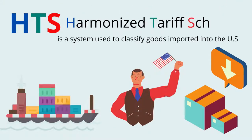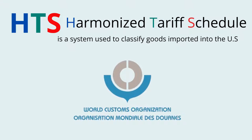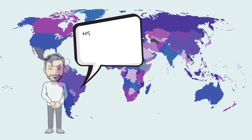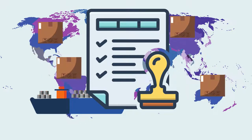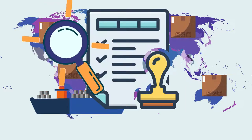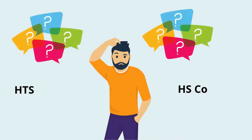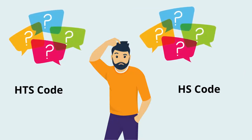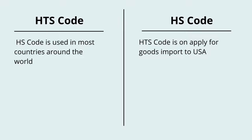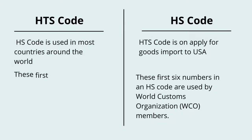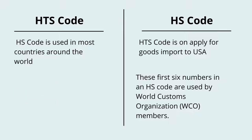HTS, harmonized tariff schedule, or HTS US code is a system used to classify goods imported into the US, and is based on the global HS code system used to classify trade goods worldwide. HS codes and HTS codes all refer to the World Customs Organization's, WCO, published nomenclature for the classification of goods traded across borders. This system allows customs authorities to identify traded products in a standardized way. You might be confused about the difference between HS code and HTS code, but they are not the same. For most countries the HS code is used, but when it comes to the USA you must use HTS code to classify the duties rate.